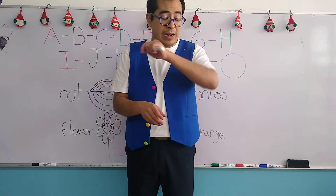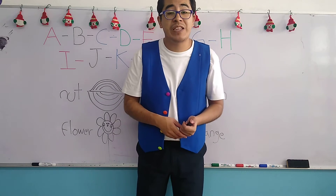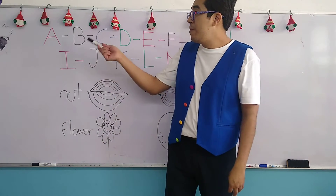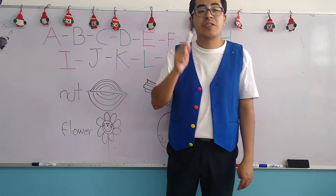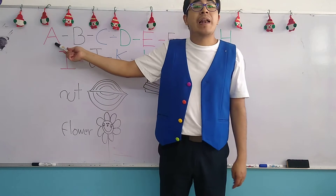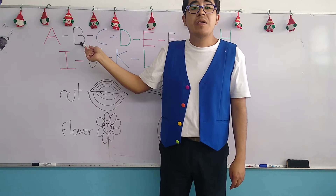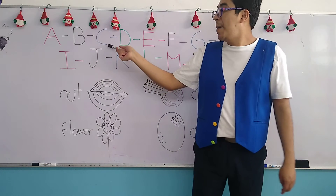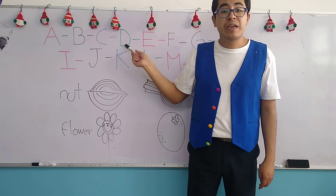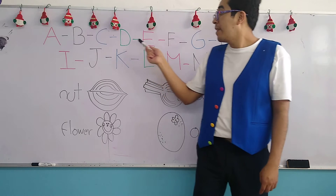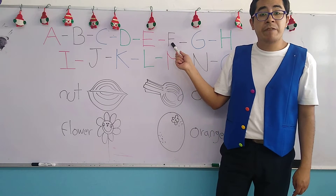Let's begin with the review of the alphabet — the letters we have seen so far. Remember, whenever we mention a letter, we also say an object that begins with that letter. Capital A — airplane. Capital B — boots. Capital C — car. Capital D — dog. Capital E — elephant. Capital F — fish.